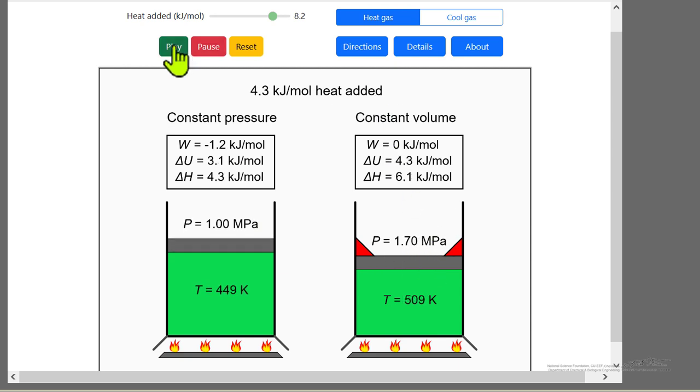So I'll continue until we get to a total of 8.2. Temperature's significantly different. This temperature is lower than this temperature because part of the heat went into work and the rest went into increasing the internal energy and the enthalpy. Those numbers are lower than for the constant volume.